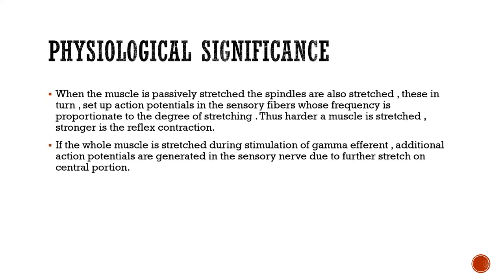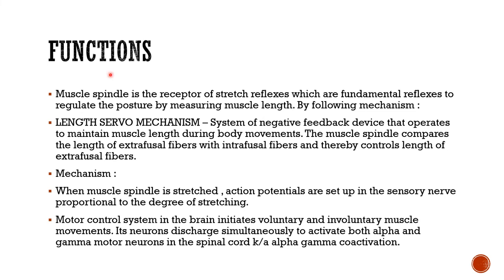What is the physiological significance of the muscle spindle? When the muscle is passively stretched, the spindles are also stretched. These set up action potentials in sensory fibers whose frequency is proportional to the degree of stretching — thus the harder the muscle is stretched, the stronger the reflex contraction. If the whole muscle is stretched during stimulation of gamma efferents, additional action potentials are generated due to further stretch on the central portion. The muscle spindle is a receptor of stretch reflexes, which are fundamental reflexes that regulate posture by measuring muscle length. The main physiological significance of stretch reflex and muscle spindle is maintaining body posture.